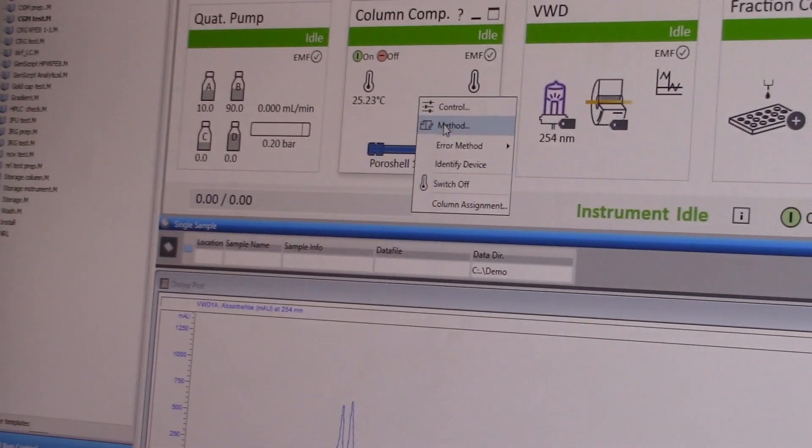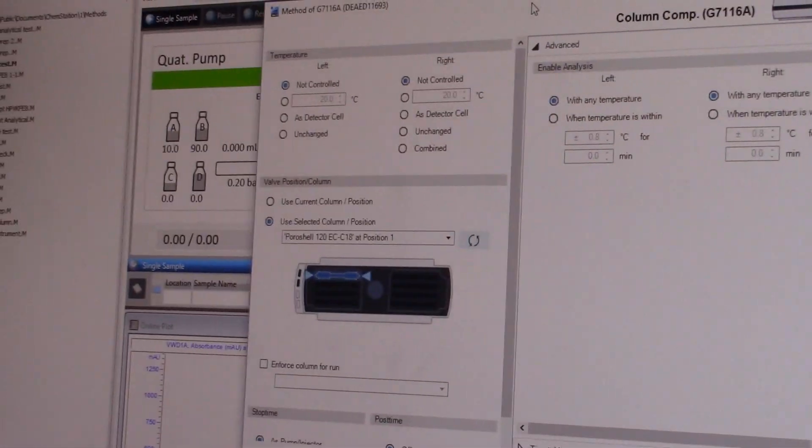Next, you will check the column panel. Here you can see what column you have and change some settings.